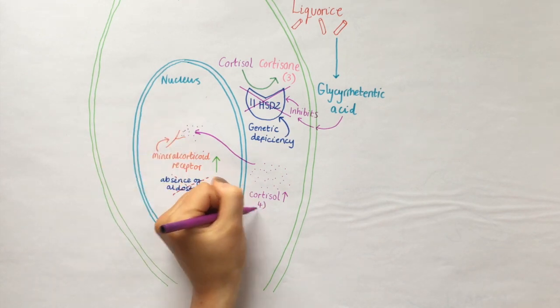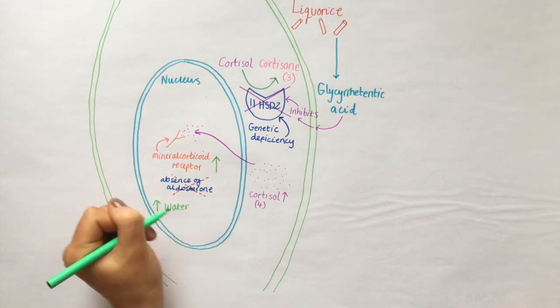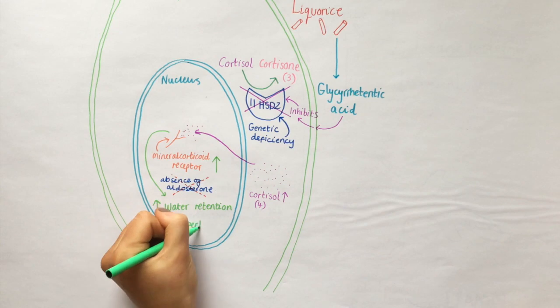Cortisol is secreted at high levels in normal function, but will lead to excessive water retention and hypertension if not converted to cortisone.